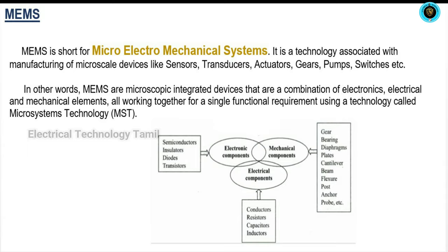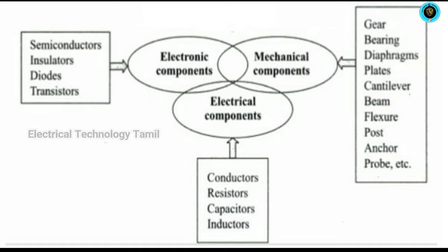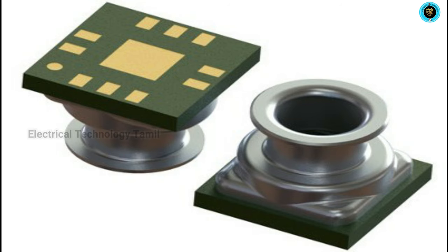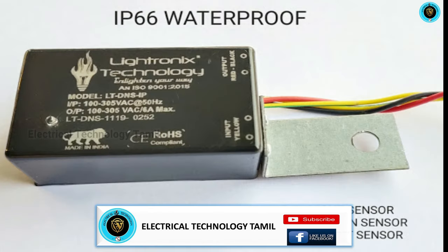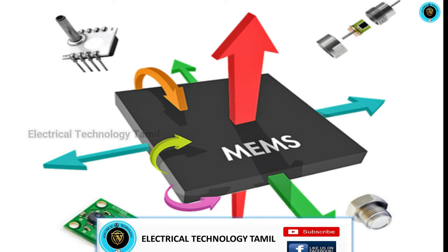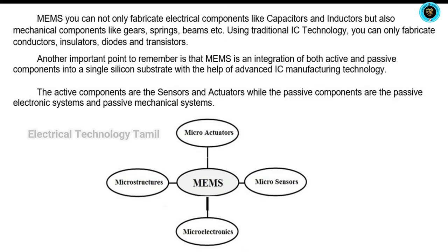In this diagram, the electrical component, mechanical component and electronics component make up the MEMS sensor. The mechanical components include capacitors, insulators, gears, bearings, springs, and so on.